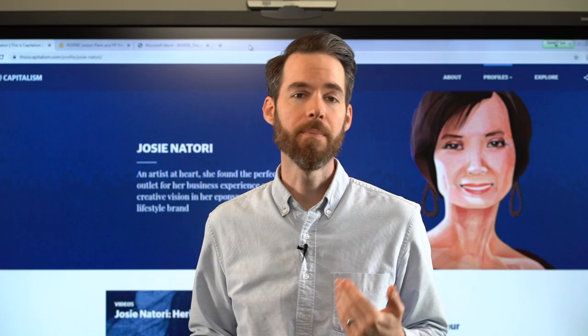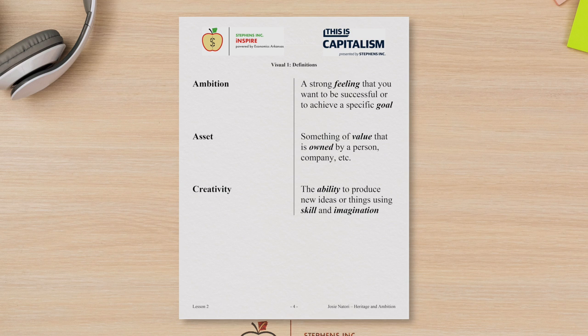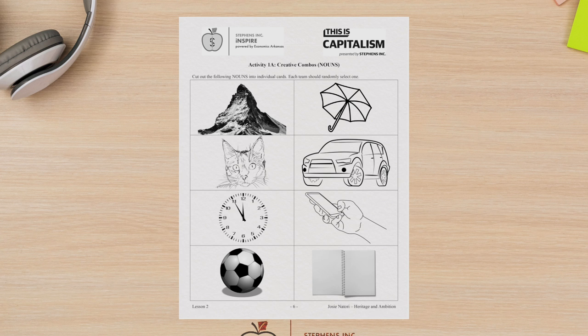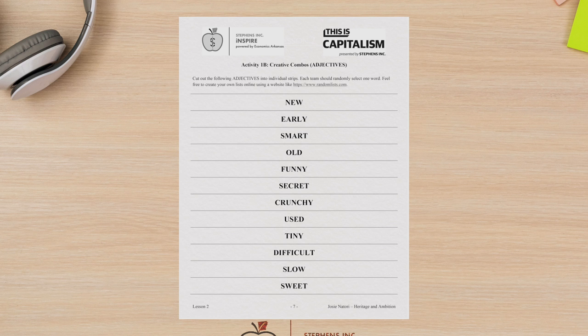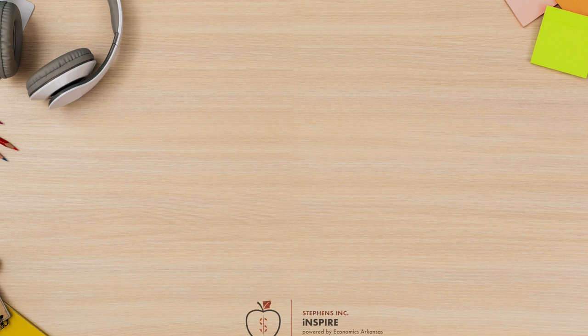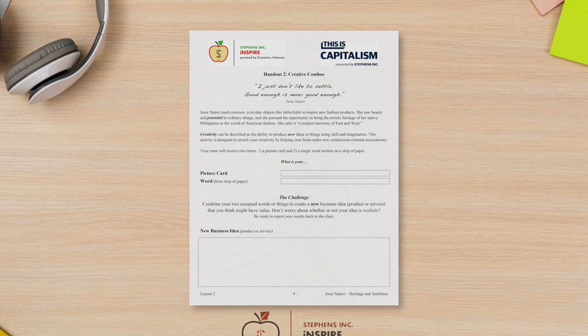But let's see how the mini lesson and the extension activity continue to add value through a deeper dive. Using Visual 1 definitions, review each definition. Explain that teams will be given a couple random assets and will use creativity to combine them into new business ideas, either products or services. With students still in teams of three or four, randomly distribute one picture card from activity 1A and one word strip from activity 1B to each team. Distribute a copy of Handout 2 Creative Combos to each team and display Visual 2 Creative Combos during this activity so teams can name their ideas.